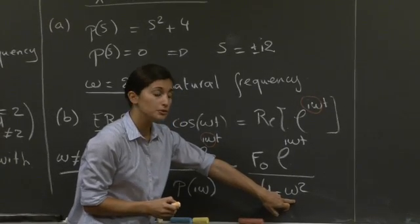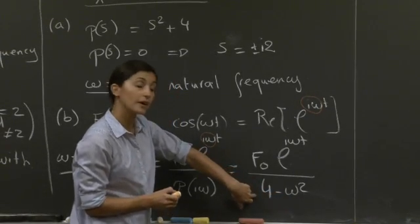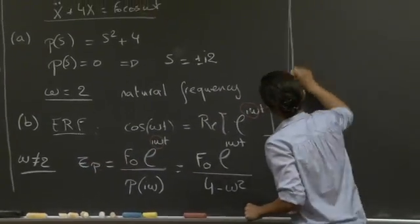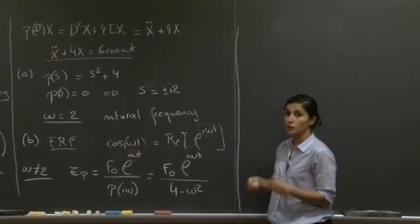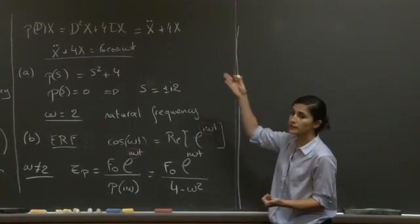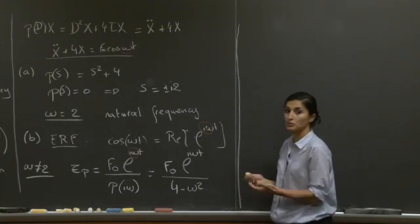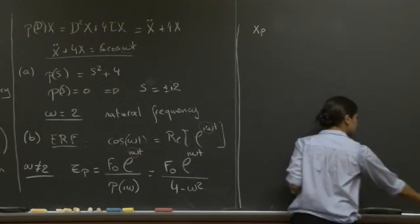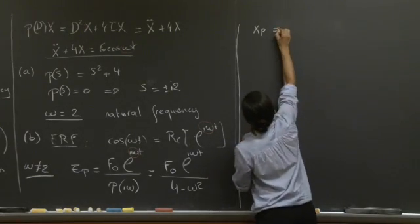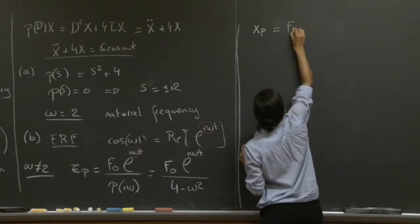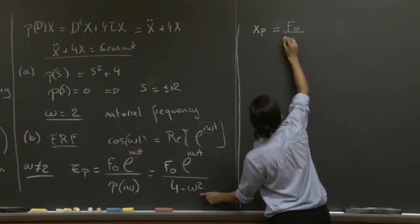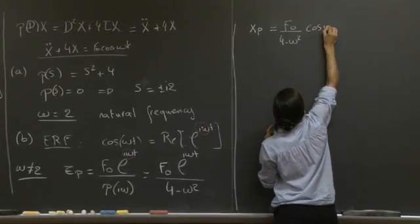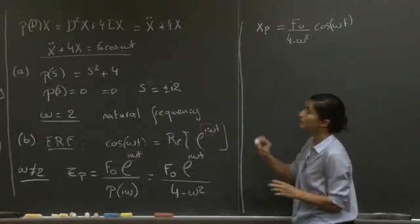So here again, the omega equal to 2 danger zone approaches, where we would be dividing by 0 if we didn't take the constraint omega not equal to 0. So this is the complex form of this particular solution, but we're dealing with a real valued problem, so we want to take the real part of this to have the solution to the problem we were given. And so that would just give us f0 over 4 minus omega squared cosine omega t.